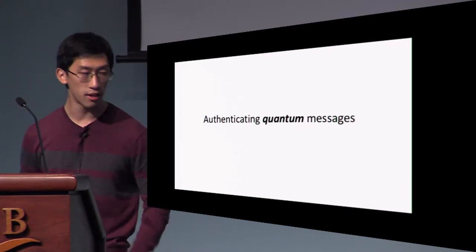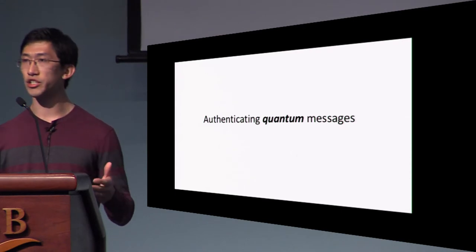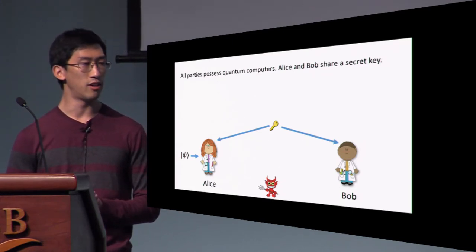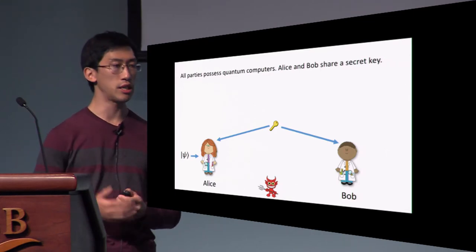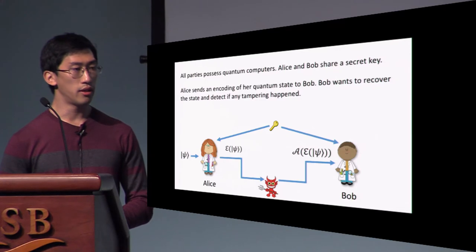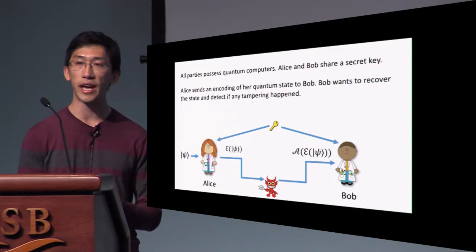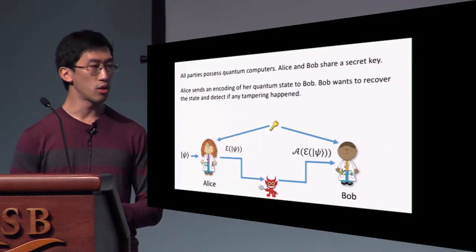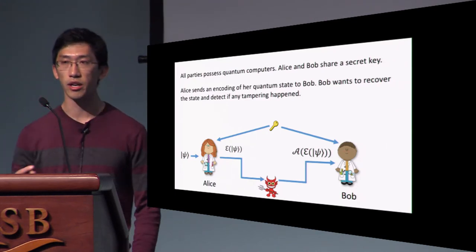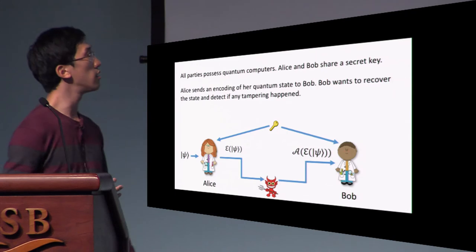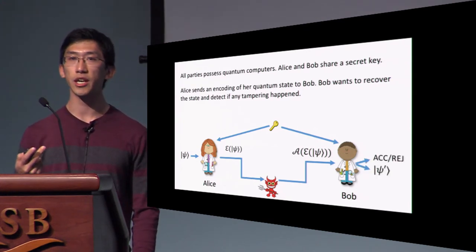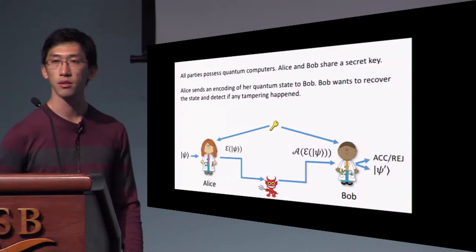Let me now turn to the quantum setting where we want to authenticate full-fledged quantum data. Now all parties possess quantum computers. Alice and Bob share a secret key. Alice has some quantum state ψ she wants to send to Bob. Bob wants to recover the state and detect if any tampering has occurred. Alice encodes her quantum state as E(ψ), sends it across the wire, the adversary performs some arbitrary quantum attack A on this encoding, and Bob has to decide whether to accept or reject, hopefully recovering ψ' close to the original ψ.